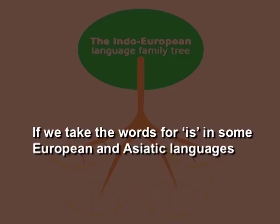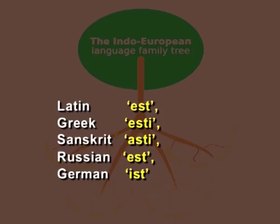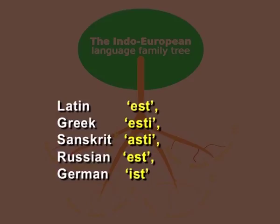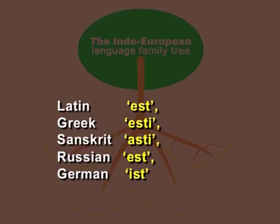For example, if we take the words for 'is' in some European and Asiatic languages, we may reconstruct with fair probability the ancestral prehistoric word from which all of these must have descended. Like Latin 'est', Greek 'esti', Sanskrit 'asti', Russian 'est', and German 'ist'. English belongs in all its stages to the Indo-European family of languages.